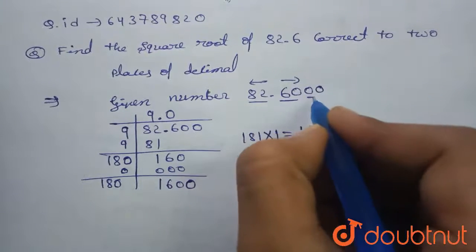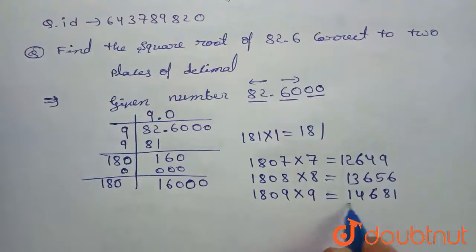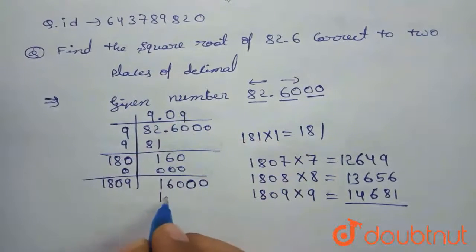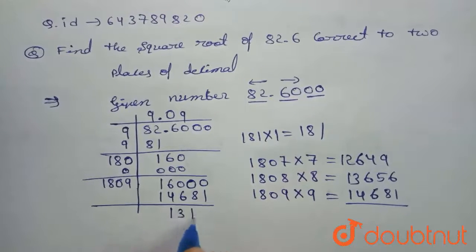We have to take 2. 1809 into 9 is 14681. By subtracting these two, you will get 1319.